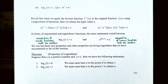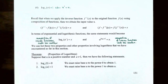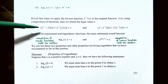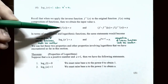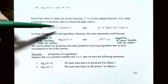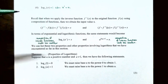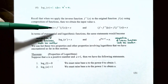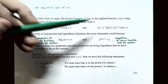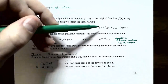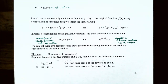Since a logarithmic function with base a is the inverse of an exponential function with base a, composing them returns the input value x. If the inverse function is on the outside and f(x) on the inside — f⁻¹(f(x)) — the functions undo each other, giving back x. Equally, f(f⁻¹(x)) also returns x, because inverse functions undo one another.